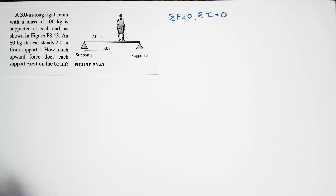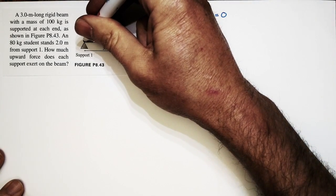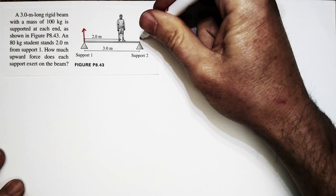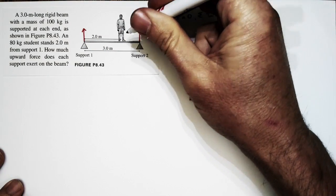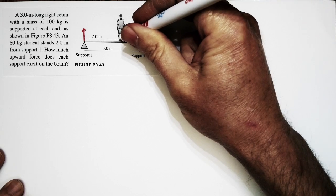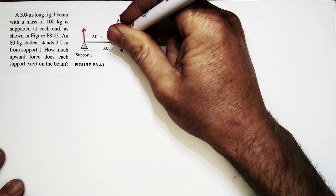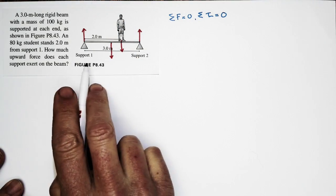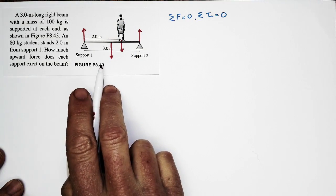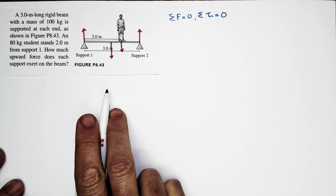Let's start by noticing every place where something touches the beam. There's a support at one end that provides an upward force, and a support at the other end that also provides an upward force. There's a student standing on it which provides a downward force, and then there's the weight of the beam itself which provides a downward force. So here are our four forces, and each one will also provide a torque.